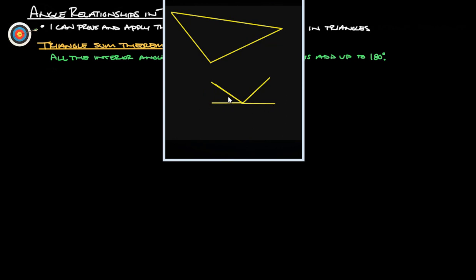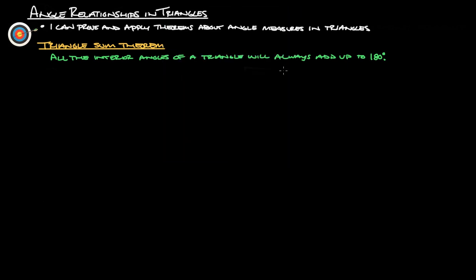You can do that with any triangle. Basically, what you can do is take a paper triangle, tear off all three corners, line them all up together, and you should always get a straight line — which means that all the angles of a triangle will always add up to 180 degrees. That's the triangle sum theorem.